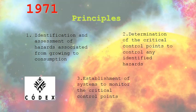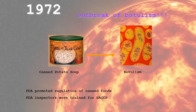From this collaboration with Pillsbury, in 1971 the first three principles were actually introduced: number one, hazard analysis; number two, the determination of critical control points; and number three, a way of monitoring those systems. Then a year later in 1972, there was a massive outbreak of botulism in canned foods and dried soups. That year, the American food organization promoted the regulation of canned foods, and inspectors started to be trained in HACCP to prevent further outbreaks of botulism.